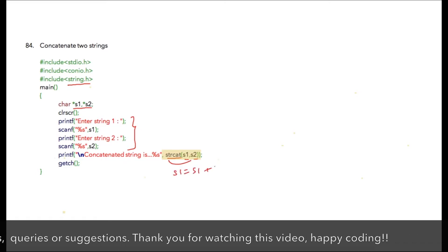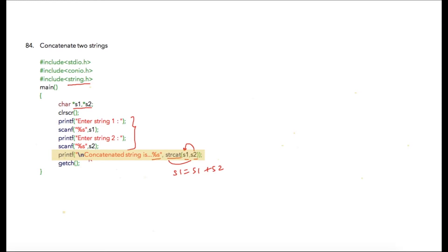So contents of s2 will be appended at the end of s1 which will give us a concatenated string, and that concatenated string is printed using percent s. So our final result would be concatenated string is percent s, and percent s will be replaced with the result of strcat.